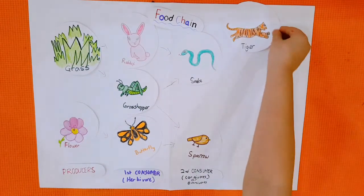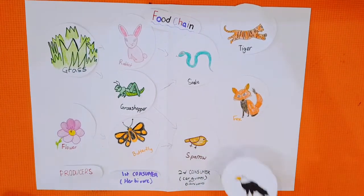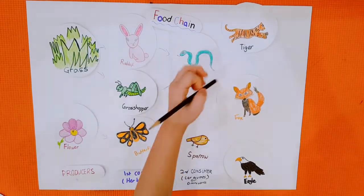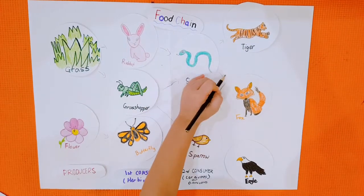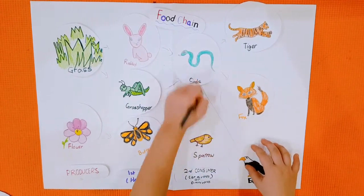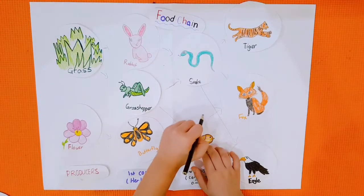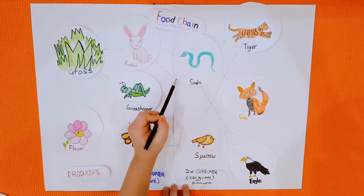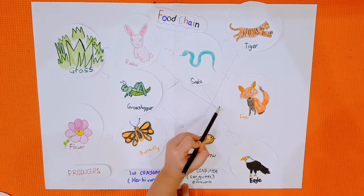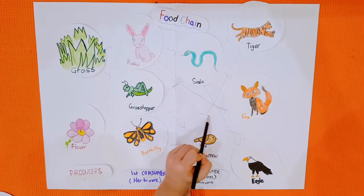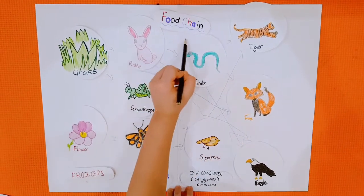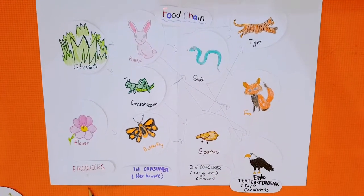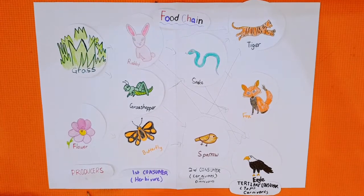Next, there are tiger, fox, and eagle. They eat snake and sparrow, and they also eat rabbit. These are called tertiary consumers, which are top carnivores.